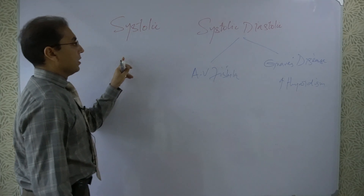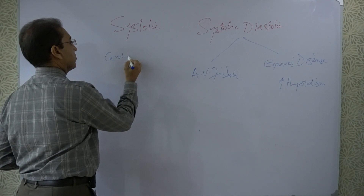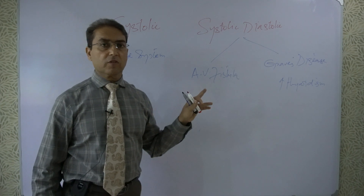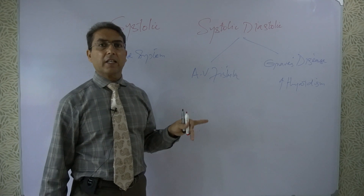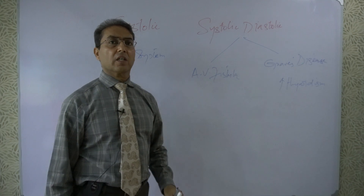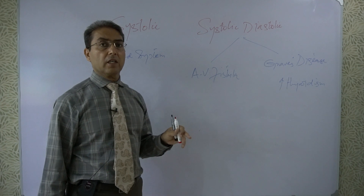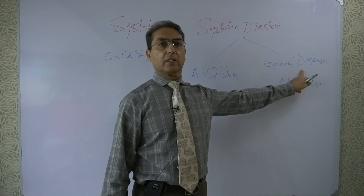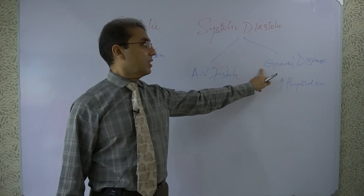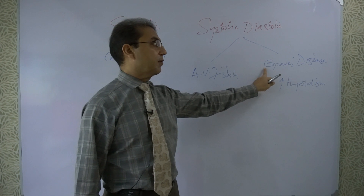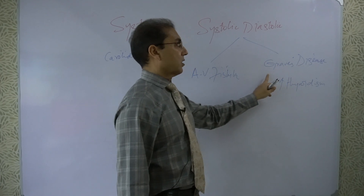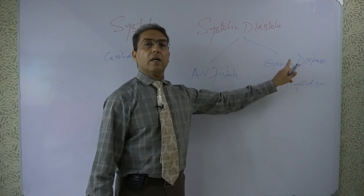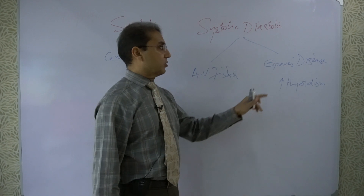A systolic carotid bruit can sometimes extend into diastole when the occlusion is quite tight. This can be differentiated from Graves disease because Graves disease has its own classical features: tachycardia, bounding pulses, weight loss, and features of sympathetic overactivity. So if confused whether a systolic-diastolic bruit is from the thyroid gland or the carotid system, look for clinical features of thyroid disease — in Graves disease they will be present.